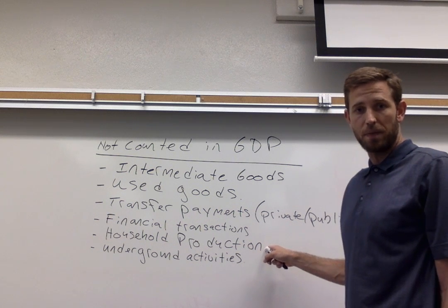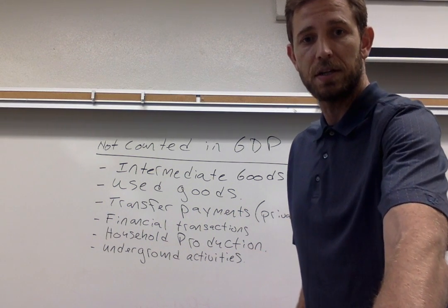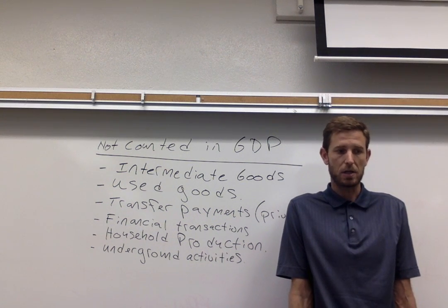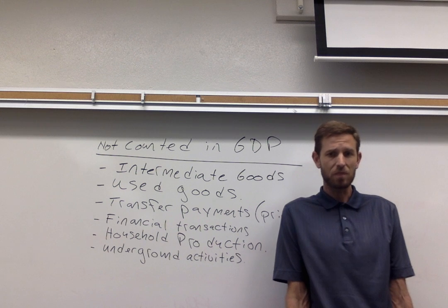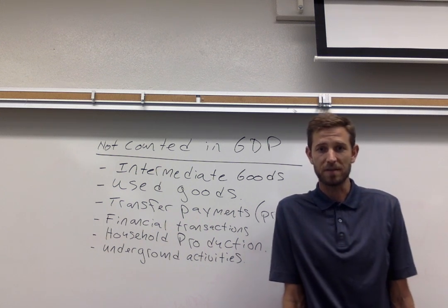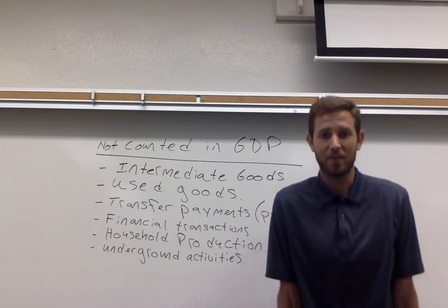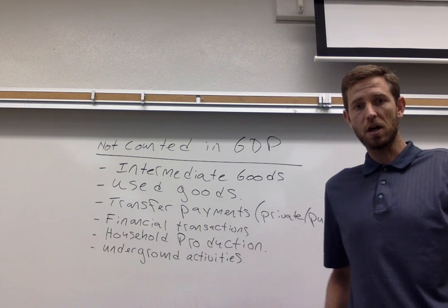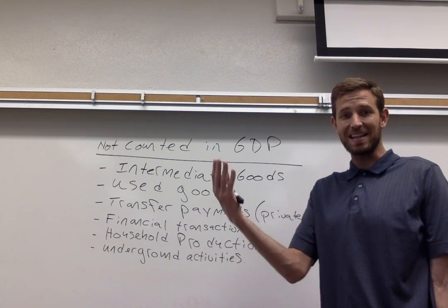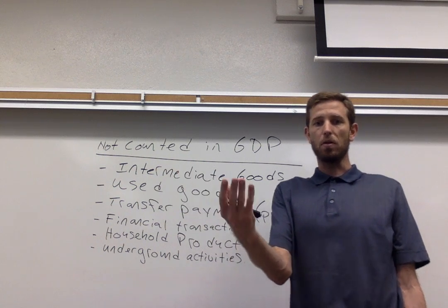Household production does not show up in gross domestic product. Household production is the value of something that someone might produce but not turn around and sell in a market context. For example, later today I plan to make some dinner for myself and my family, and might do some yard work. That's all useful stuff — production that's occurring in the economy — but it's not going to show up in GDP because there's no market transaction. I'm not selling my time to cook dinner or mow the lawn.